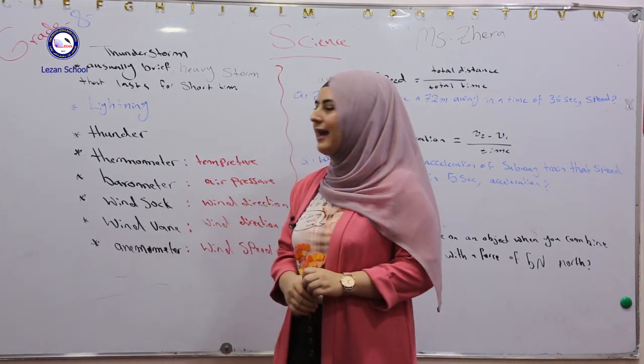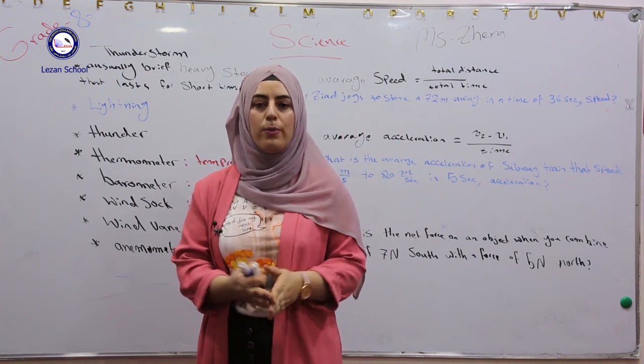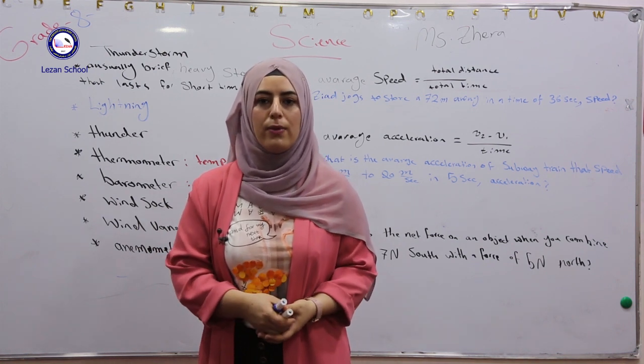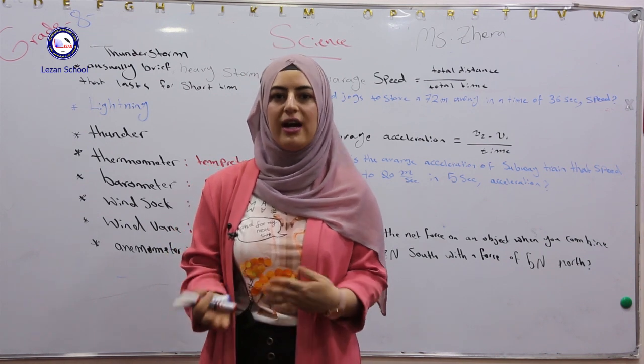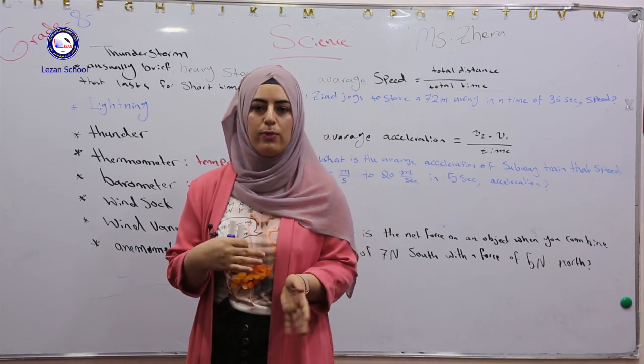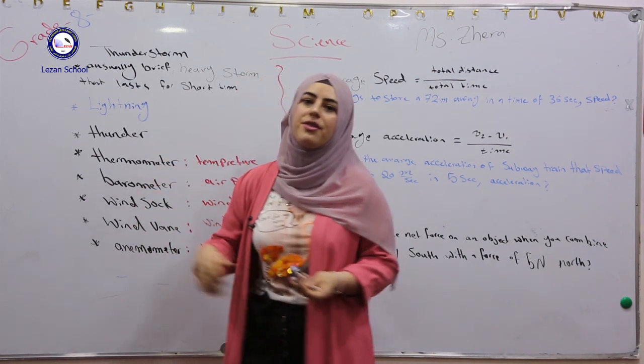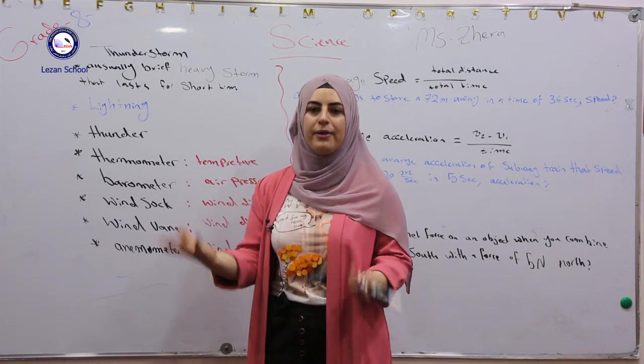Lightning means this happens in the sky between two areas. We have oppositely charged areas between positive area charge and negative charge area. In this moment, the positive and negative attract each other and produce lightning. What's the thunder? Thunder happens when the sound comes when lightning occurs.